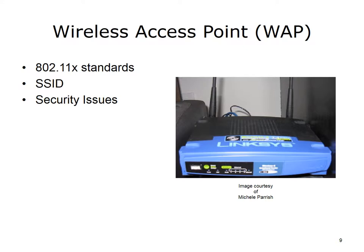A wireless access point (WAP) is used to provide wireless access to a network using the 802.11x standards. Each WAP has a Service Set Identifier (SSID), which wireless devices use to make an association with the WAP. Wireless is by default an unsecure transmission method, so precautions should be taken to secure your WAP, including setting up wireless encryption standards that require a password to authenticate and encrypt transmitted data. Unsecure WAPs are a significant security risk. Most home WAPs are a combination of a switch with multiple ports, a router that moves packets between wired and wireless networks, and a wireless access point that provides access to wireless networks.